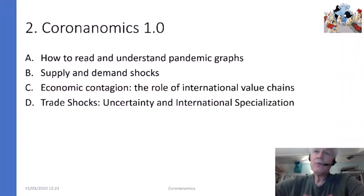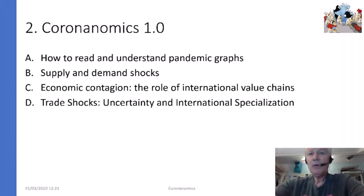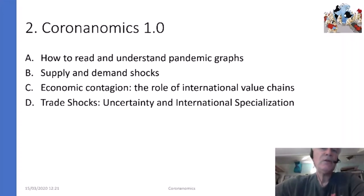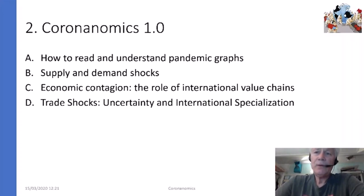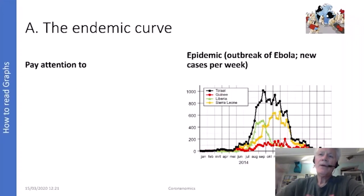Now let's move to coronanomics 1.0. There will be many articles and books coming in the next year, but we cannot wait for that. I want to do four things: first, how to read and understand pandemic graphs; second, supply and demand shocks; third, economic contagion — especially the role of international value chains; and finally, a model of trade shocks focusing on the impact of uncertainty and international specialization.